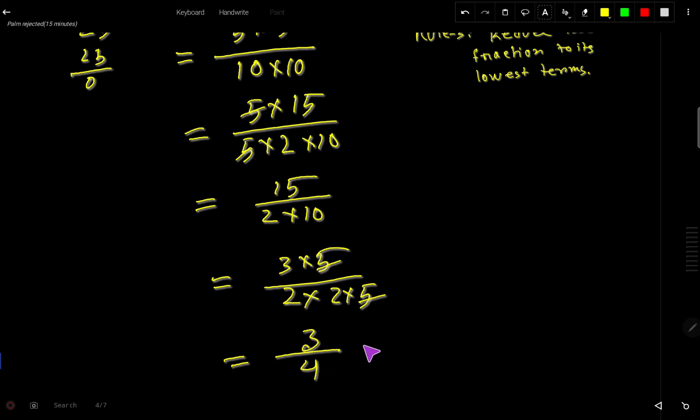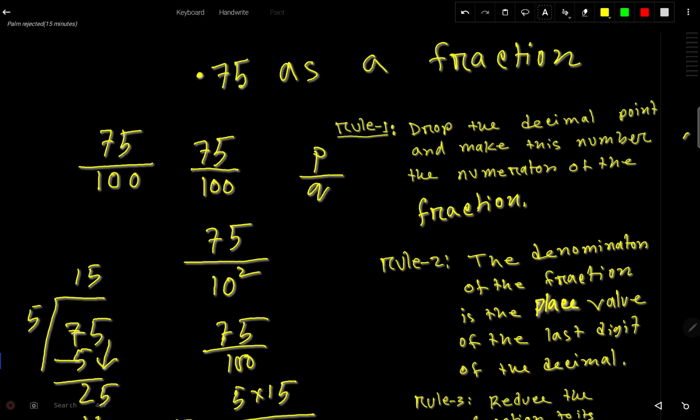So 3 over 4. 3 is lower than 4, so you cannot split this fraction. 3 over 4 is the answer. So 0.75 as a fraction is 3 over 4. Thank you for viewing this video.